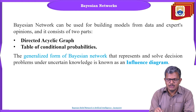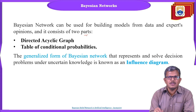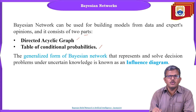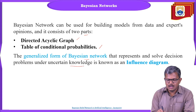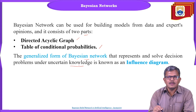In Bayesian networks, we have two different building components: one is the directed acyclic graph, and another is the table of conditional probabilities. The Bayesian network represents the conditional probabilistic distribution of values. In generalized form, the Bayesian network represents and solves decision problems under uncertain knowledge — where knowledge is not certain — using a specific diagram called an influence diagram.